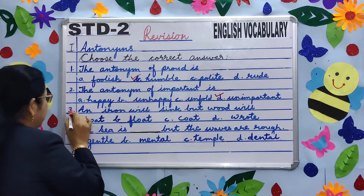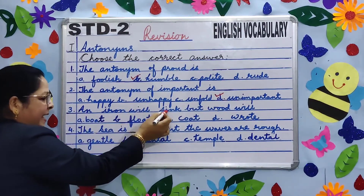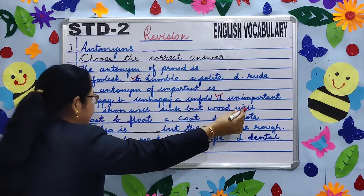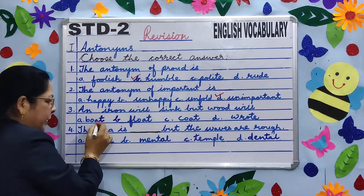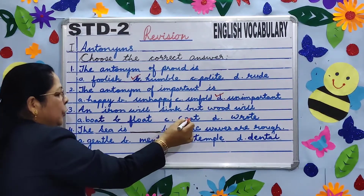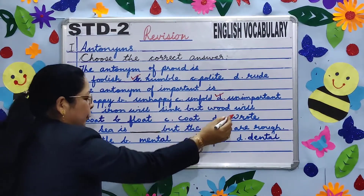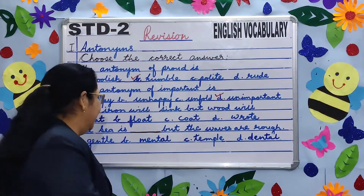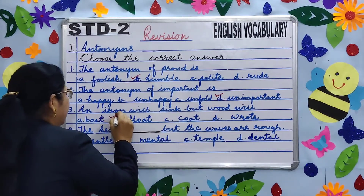Number three. An iron will sink, but wood will — A. Boat, B. Float, C. Court, D. Road. Which is the right answer? Very good — B. Float.